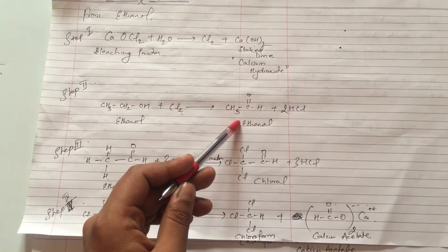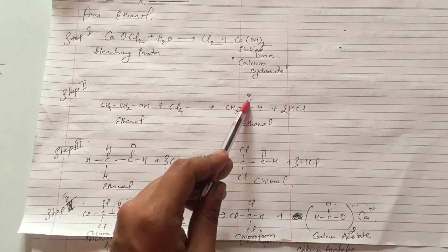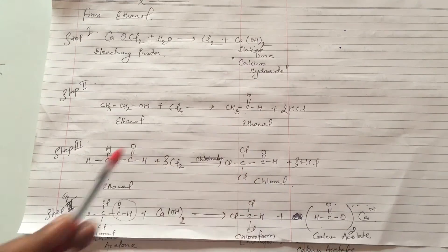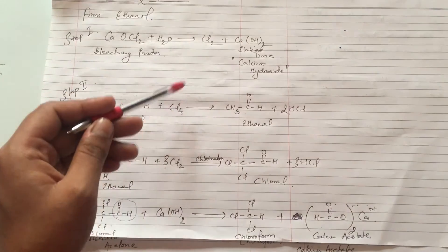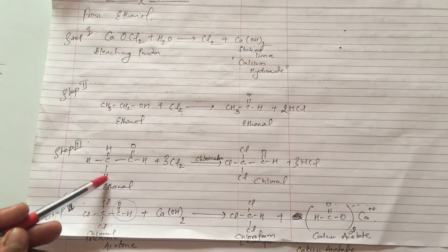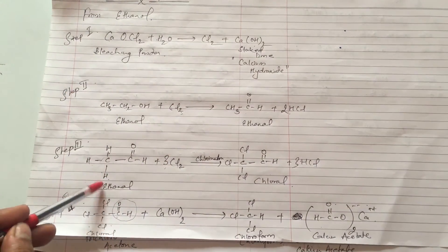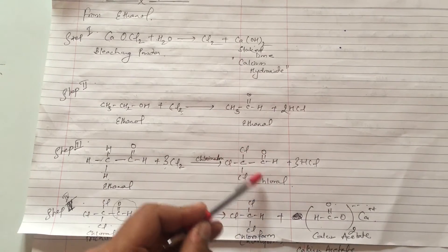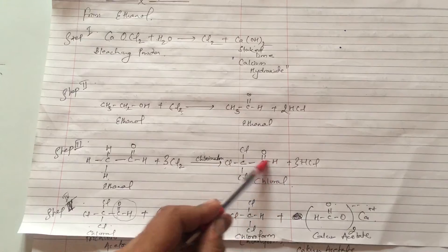So the first product is ethanol. This aldehyde group has CHO and CH3. Ethanol is treated with chlorine and then chlorine is added. Chlorine CCl3 is formed which will be called trichloroacetaldehyde. The aldehyde group remains the same.